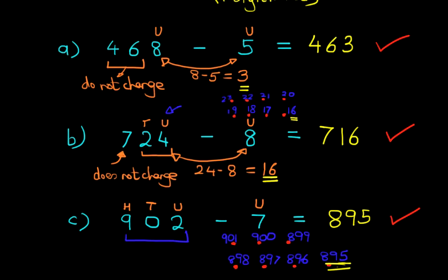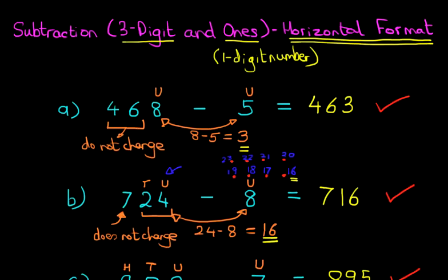There are one or two shortcut methods which we can use, but it is not applicable at this stage. We will learn those at a later stage. So that is how we subtract a three-digit number and a one-digit number using the horizontal format.